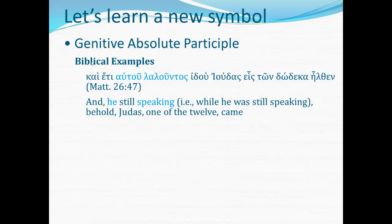We also have an appositive here: Judas, one of the twelve. So heis is an appositive renaming Ioudas, and it has a modifier, tōn dōdeka, 'of the twelve.' So that will have to be worked in, and that will give us the main clause. Then we can diagram the genitive absolute, which includes eti — 'still speaking.' Eti is a modifier for 'speaking,' and autou is the subject of that genitive absolute phrase. So can you picture that genitive absolute construction as a modifier for the main clause?